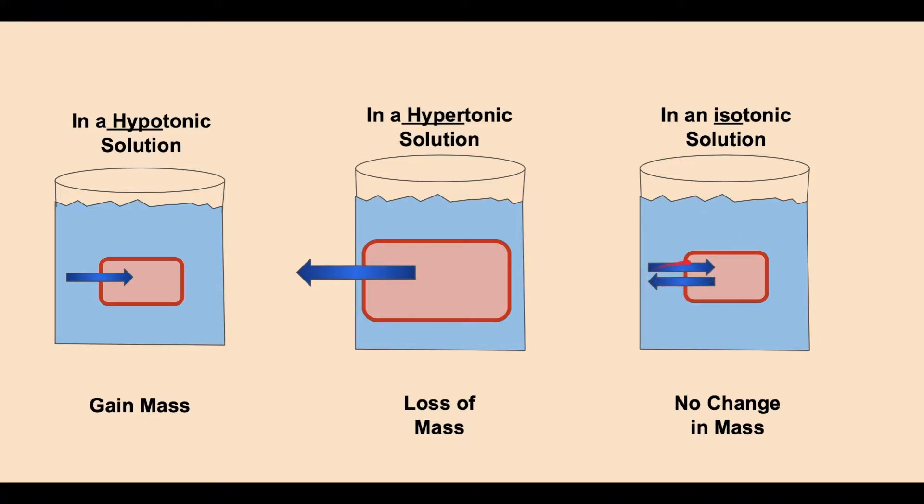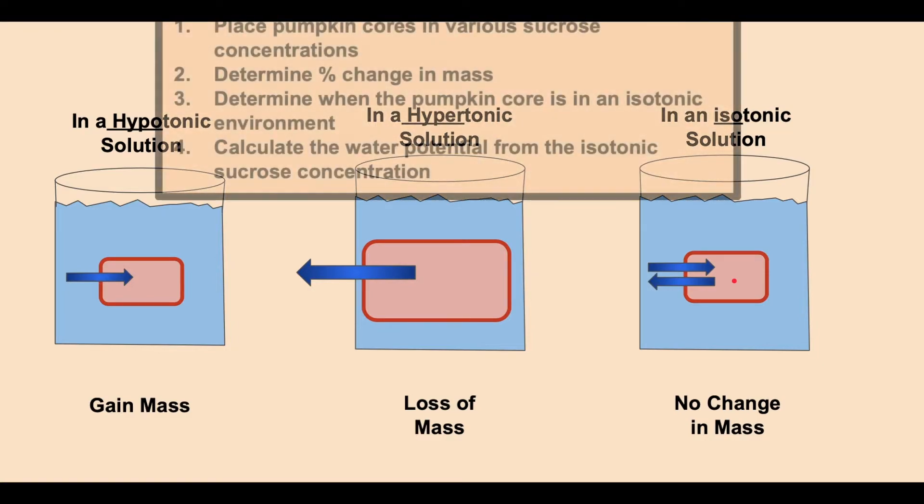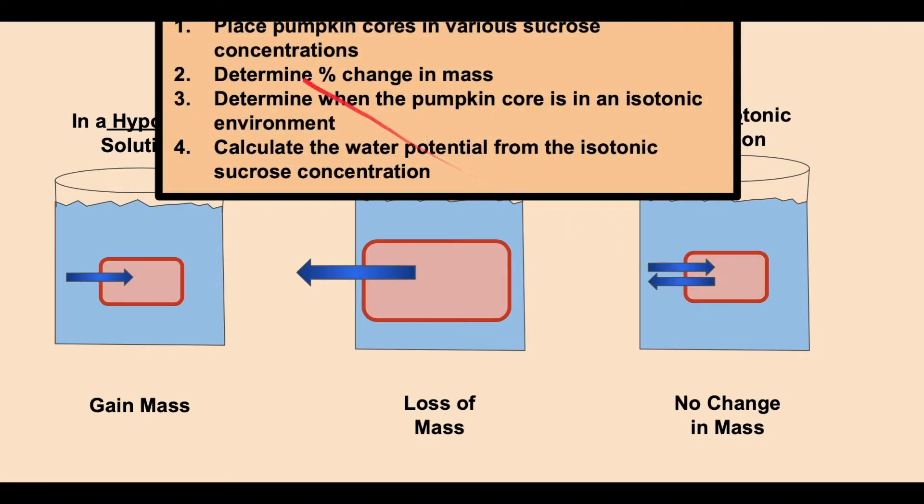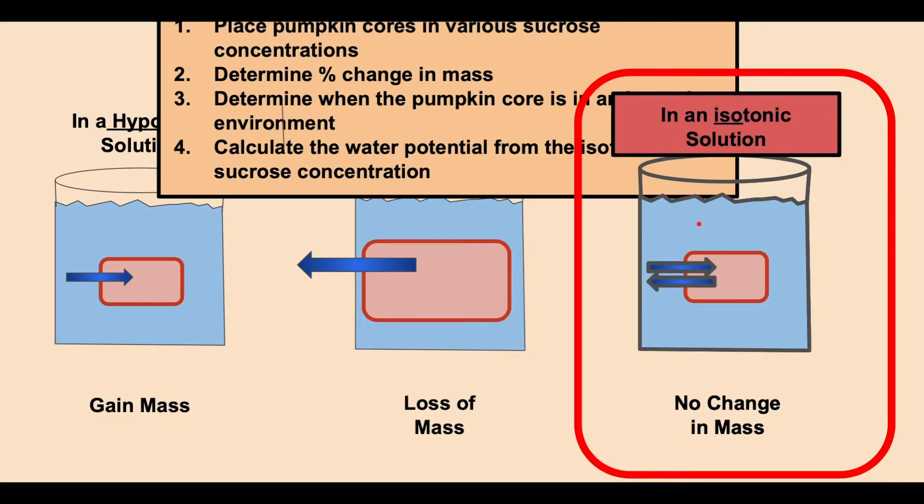An isotonic solution is going to have an equal concentration of osmotic pressure on the inside and the outside. The water potential is going to be the same. We're going to observe no change in mass. So if we place the pumpkin core in various concentrations of sucrose, let it sit overnight and determine the percent change in mass, we can then determine when the pumpkin core is in the isotonic environment. We're going to find that sweet spot, and then we're going to calculate the water potential from the known isotonic concentration of sucrose. And we are going to conclude that because this isotonic is also the water potential inside the pumpkin core.